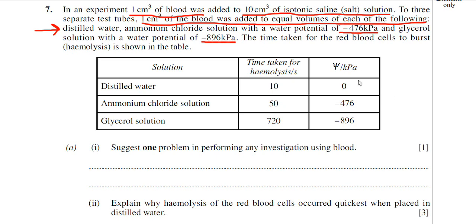Those water potential values are listed in the table in the last column: distilled water, ammonium chloride solution, and glycerol solution. Interestingly, the examiner has quoted the time taken for hemolysis to occur, measured in seconds. Remember, hemolysis is the term given to the bursting of red blood cells. For a red blood cell to burst, it has to gain water by osmosis.